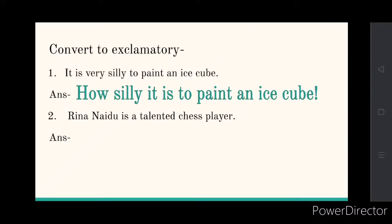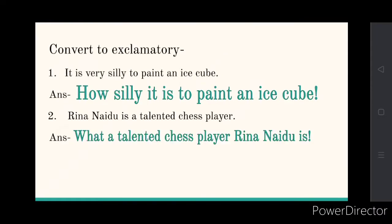The second one is: 'Rina Naidu is a talented chess player.' This is also a declarative sentence. When we convert it to exclamatory, it will be: 'what a talented chess player Rina Naidu is!' I hope you understand what the different types of sentences are and will be able to identify them.